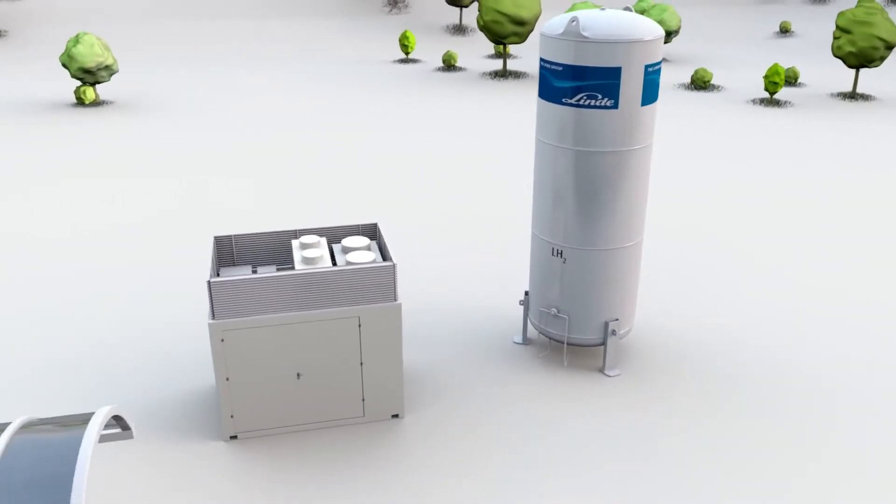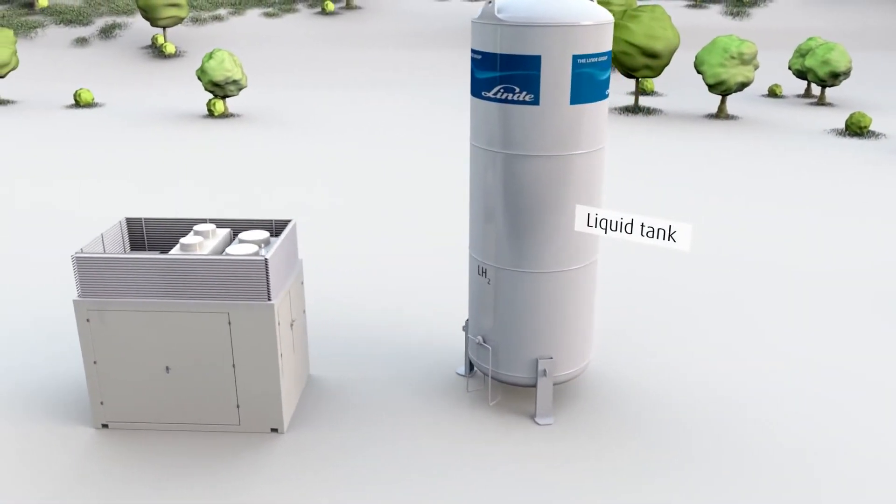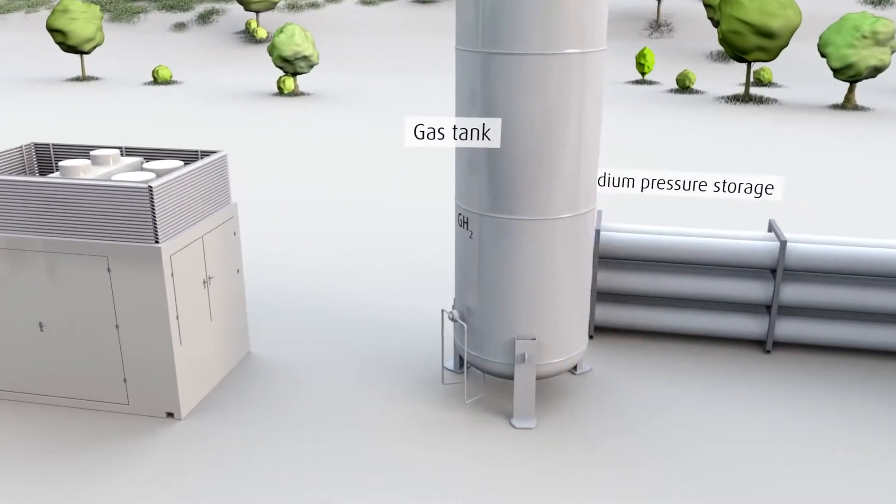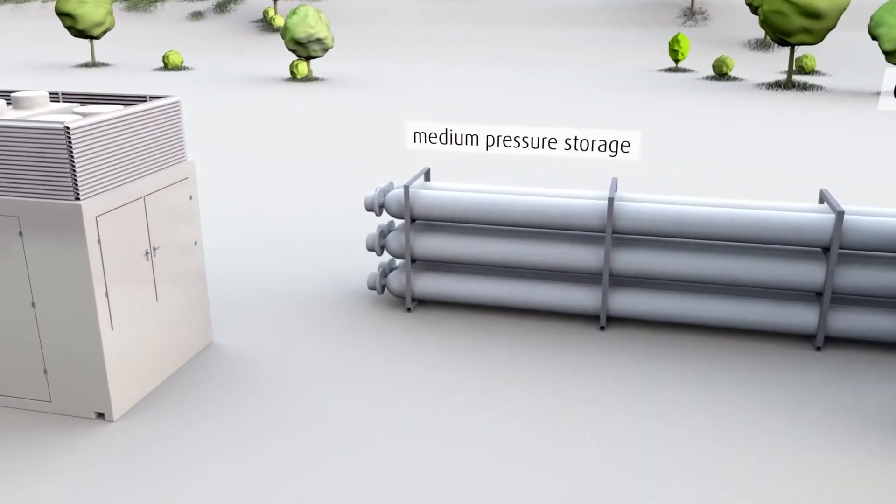Let's start with the hydrogen supply. For the on-site storage of hydrogen there are several possibilities. In the example you see a liquid tank, gas tank or medium pressure storage unit.